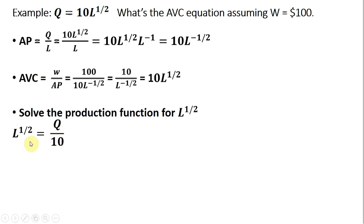Now I'm going to substitute this expression into average variable cost, where I have L to the 1 half power here. I'm going to substitute in Q divided by 10. Making that substitution, 10 times Q divided by 10, we get a very simple average variable cost equation that just equals Q.